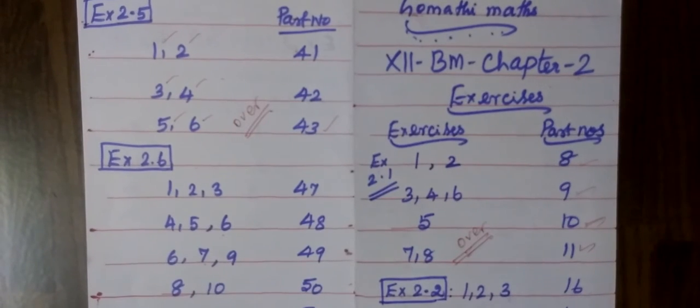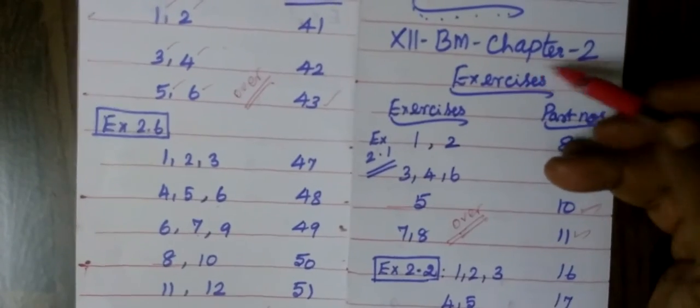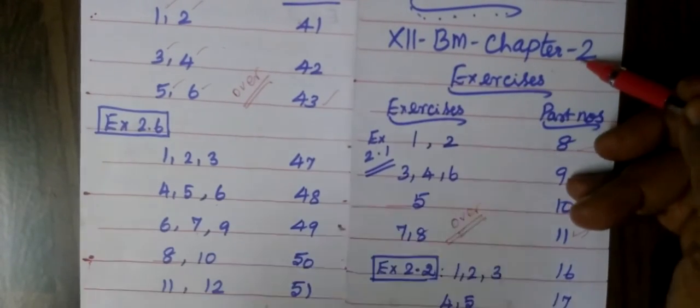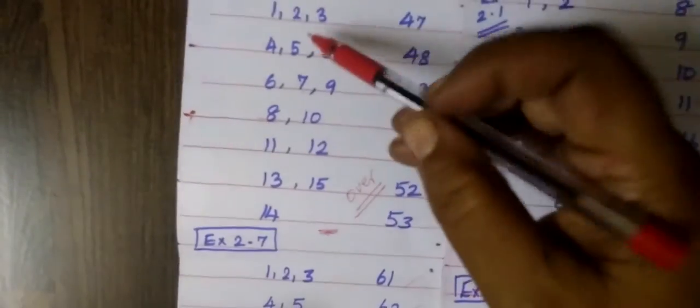Good evening students. This is from Gomari Maths Channel. This is for 12th Business Maths Chapter 2. In the last class, we have seen up to Exercise 2.6.